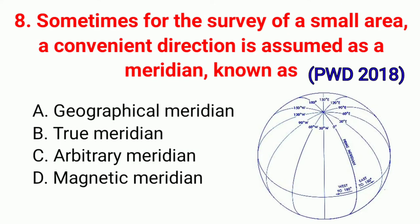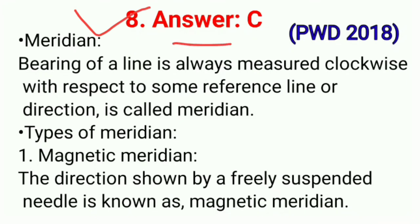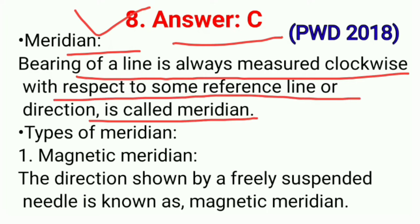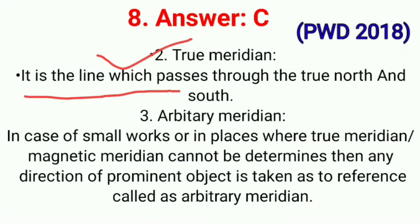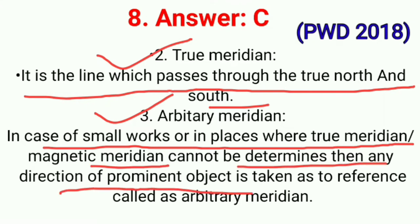Question No. 8. Sometimes for the survey of a small area, a convenient direction is assumed as meridian. This is known as — correct option C: Arbitrary meridian. The bearing of a line is always measured clockwise with respect to some reference line or direction called as meridian. There are three types: first, magnetic meridian — the direction shown by a freely suspended needle; second, true meridian — the line which passes through the true north and south; third, arbitrary meridian — in case of small work or where magnetic meridian cannot be determined, any direction of a prominent object is taken as reference. Correct option C.